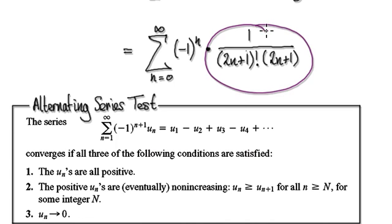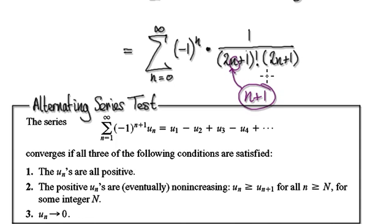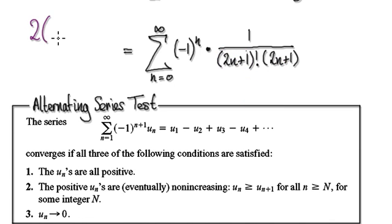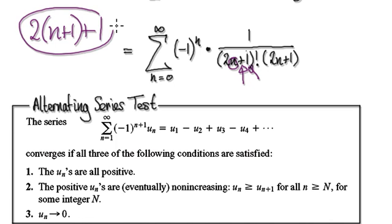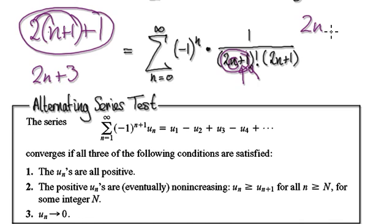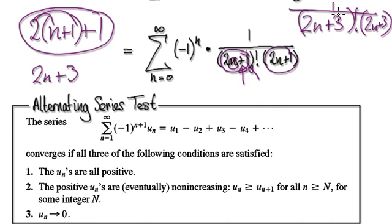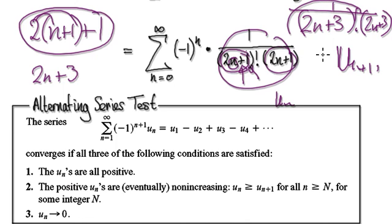So u_n is this. The next term is found by putting n+1 in. You've got 2 times (n+1), then plus 1, which gives 2n+3. So you have (2n+3) factorial in the denominator. And then this part also gives 2n+3. So this is u_n and this is u_{n+1}.